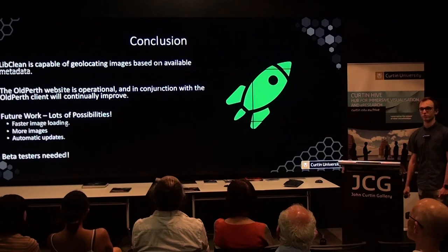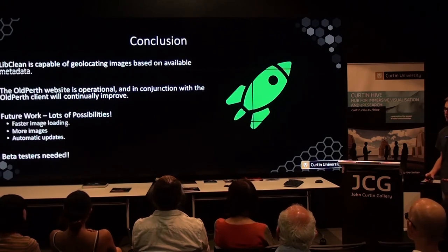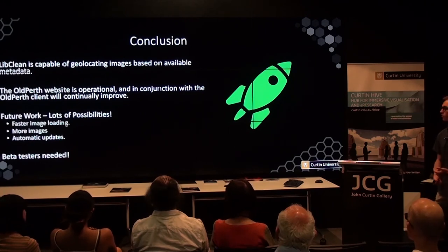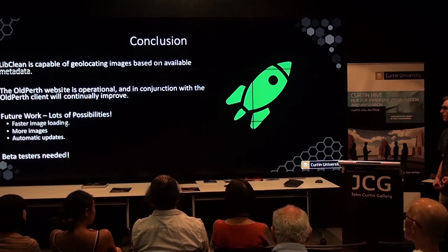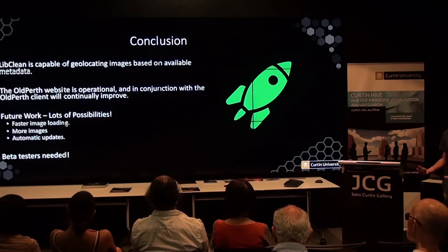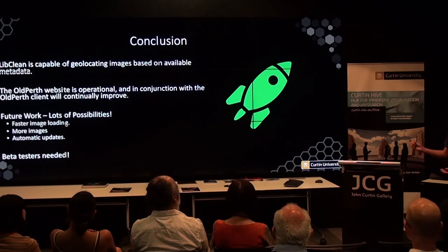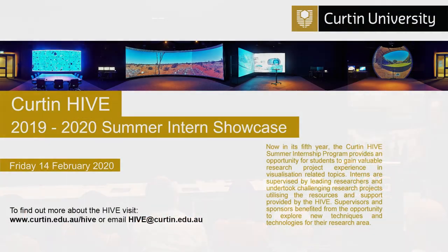LibClean is able to geolocate images based on available metadata, and the Old Perth website is operational, generating correction CSV files that will continuously improve the data over time. There is still a lot that could be done: faster image loading by storing images locally on the server, loading more catalogues — LibClean is capable of reading and merging others — and developing a back-end for automatic updates, which would allow the Old Perth client to be removed and the entire process to be automatic. And we definitely need beta testers — get in contact with us.